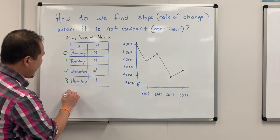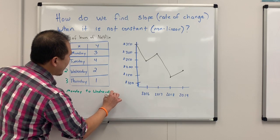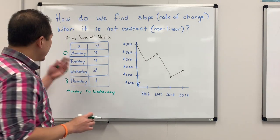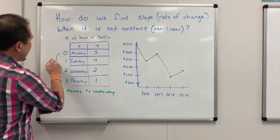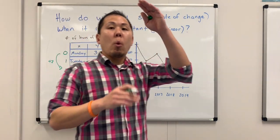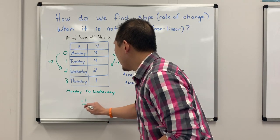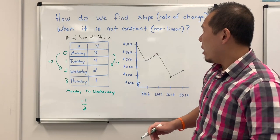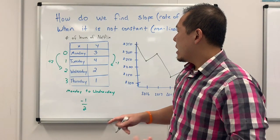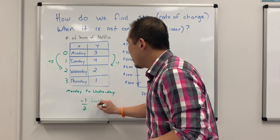We're going from Monday to Wednesday. What's that rate of change Monday to Wednesday? We can either recreate the table or we can just do the math here. If I notice from Monday it goes plus two, and from here it goes minus one. So our rate of change is the change in Y over the change in X — that's going to be negative one over two. It means we watched one less hour going in two days: negative one hour per two days.